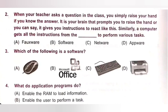Third one. Which of the following is a software? A. Mouse, B. Microsoft Office, C. Keyboard, D. Printer/Scanner. Out of these, options A, C, and D are hardware. Option B, Microsoft Office, is a software. Option B is the correct answer.